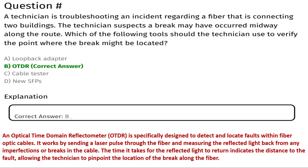An Optical Time Domain Reflectometer (OTDR) is specifically designed to detect and locate faults within fiber optic cables. It works by sending a laser pulse through the fiber and measuring the reflected light back from any imperfections or breaks in the cable. The time it takes for the reflected light to return indicates the distance to the fault, allowing the technician to pinpoint the location of the break along the fiber. That's why the correct answer is B, OTDR.